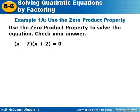Use the zero product property to solve the equation and check your answer. We have (x minus seven) times (x plus two) equals zero. So we're going to use the zero product property, meaning either x minus seven has to be equal to zero or x plus two has to be equal to zero.